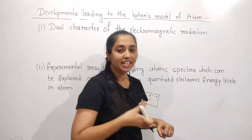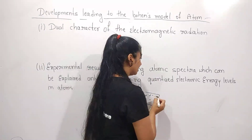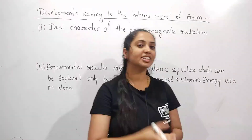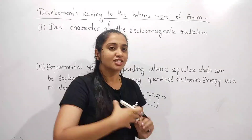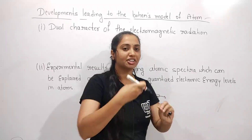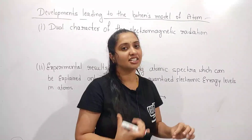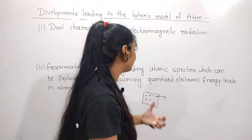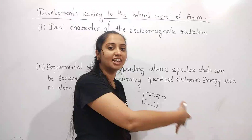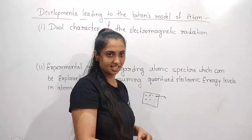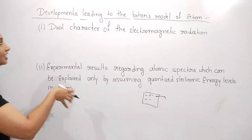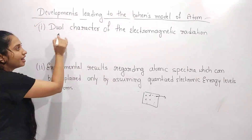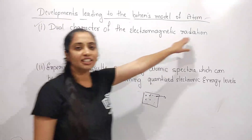Atoms interact with certain radiation, or the atoms interact with light. By the observation of the interaction of atoms with light, Bohr proposed his theory. The first factor linked to Bohr's model is the dual character of the electromagnetic radiation.